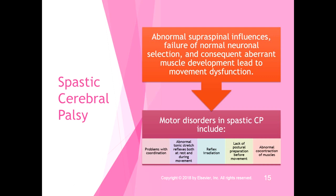The motor disorders in spastic CP include problems with coordination, abnormal tonic stretch reflexes both at rest and during movement, reflex irradiation where one reflex sets off another, lack of postural preparation before movement, and abnormal co-contraction of muscles. Medication treatments such as baclofen and tizanidine can help decrease spasticity, but CP is something a person will always have to manage — it's not going to go away.